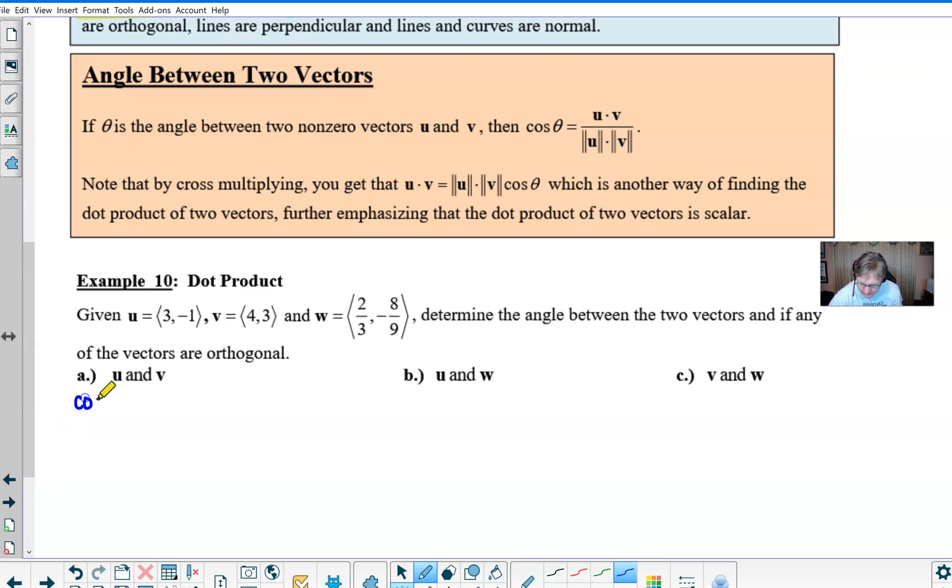For u and v, we're going to start this off and say that the cosine of theta is equal to... Now, if we take the dot product of u and v, we would get 3 times 4 plus negative 1 times 3. And then if we start working on the magnitude of vector u, 3 squared is 9, negative 1 squared is 1. And then we multiply that by the magnitude of vector v, 4 squared is 16, 3 squared is 9.